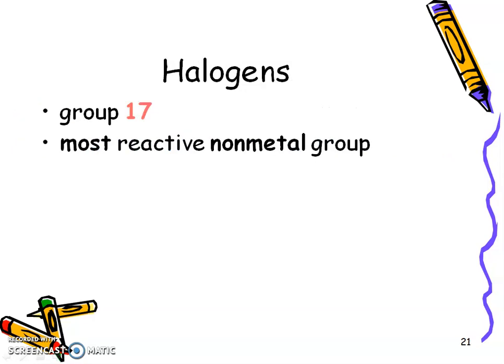All right, the halogens, now we're moving all the way to the right of the periodic table. Group 17, those are going to be your most reactive non-metal group.